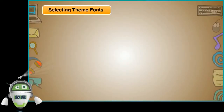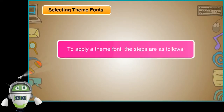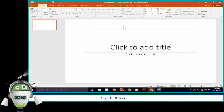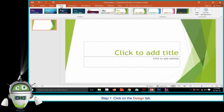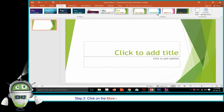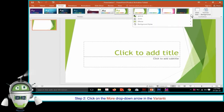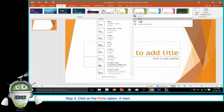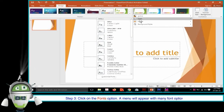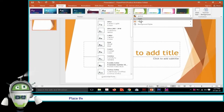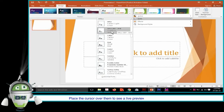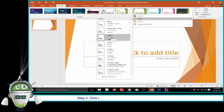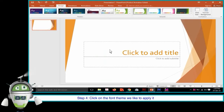Selecting Theme Fonts. To apply a theme font, the steps are as follows. Step 1: Click on the Design tab. Step 2: Click on the More drop-down arrow in the Variance group. Step 3: Click on the Fonts option. A menu will appear with many font options. Place the cursor over them to see a live preview of that font in the slides. Step 4: Click on the font theme we like to apply it to the slides.